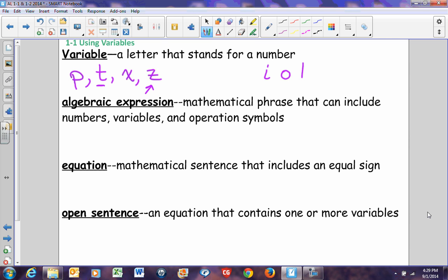An algebraic expression is a mathematical phrase that can include numbers, variables, and operation symbols. It is a phrase, just like in English, a phrase does not have a complete thought to it. It doesn't start with a capital letter and it doesn't end with a form of punctuation. In algebra, an algebraic expression is a phrase. It's part of an equation, but not all of the equation. It has to contain a variable in order to be algebraic, otherwise it's just numerical.